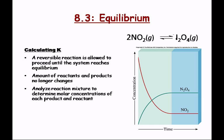A reversible reaction is allowed to proceed until the system reaches equilibrium. You can see from the graph that the concentration of the reactants decreases over time while the concentration of the products increases. Once you get past a certain time point, the concentrations no longer change — the amounts of reactants and products stop changing. The calculation of K is actually the analysis of this reaction mixture to determine the molar concentrations.